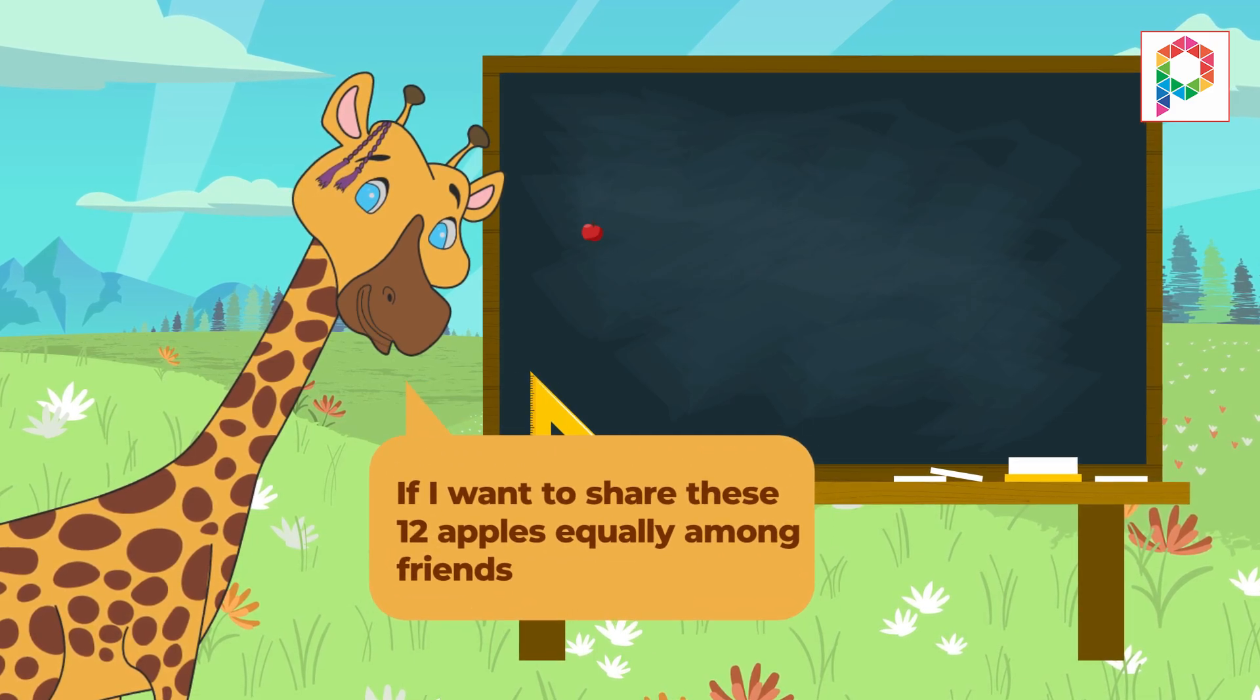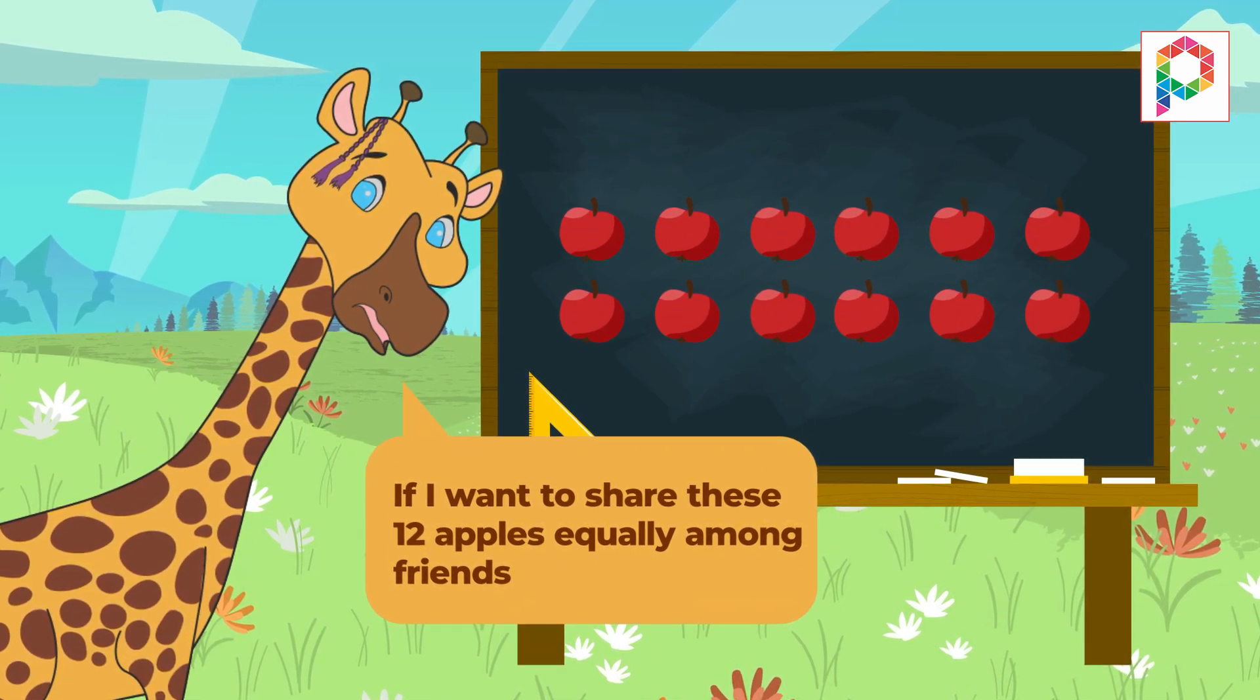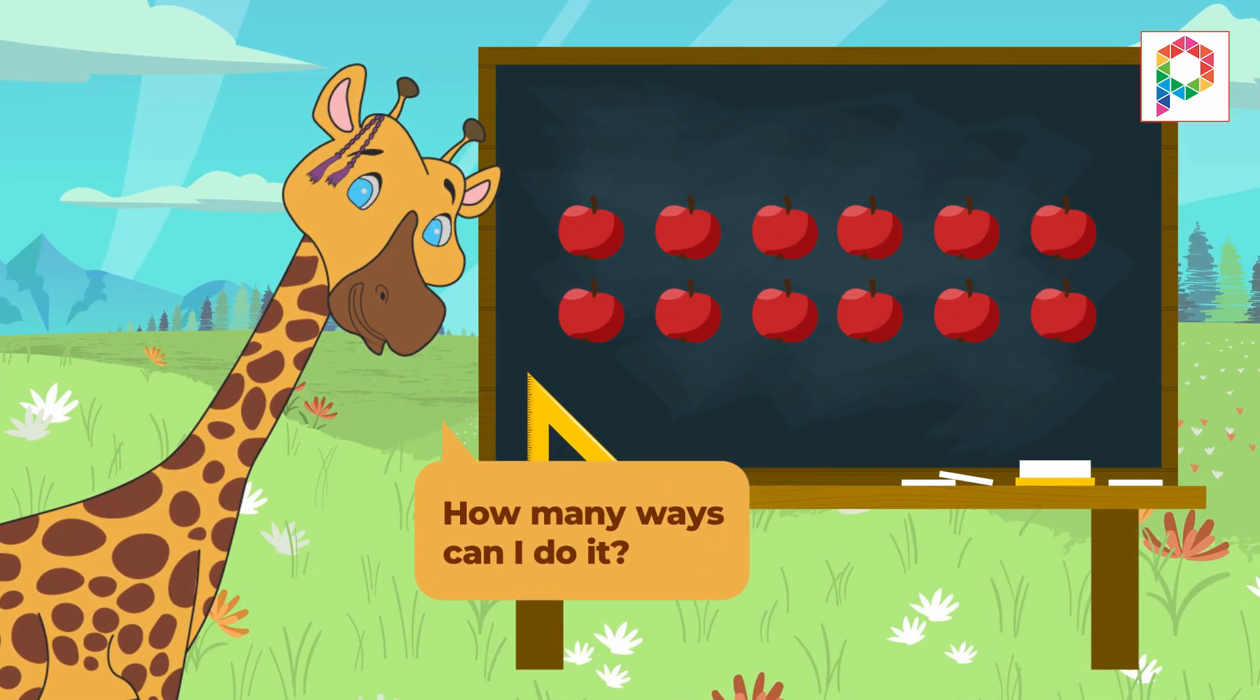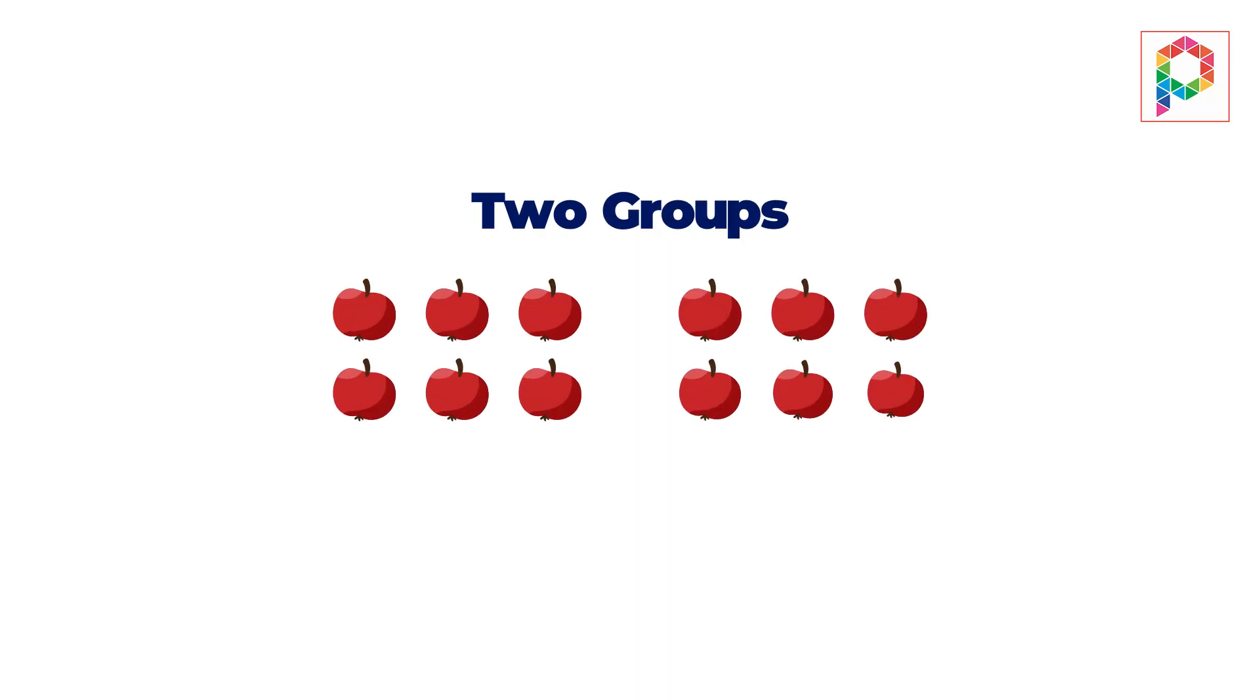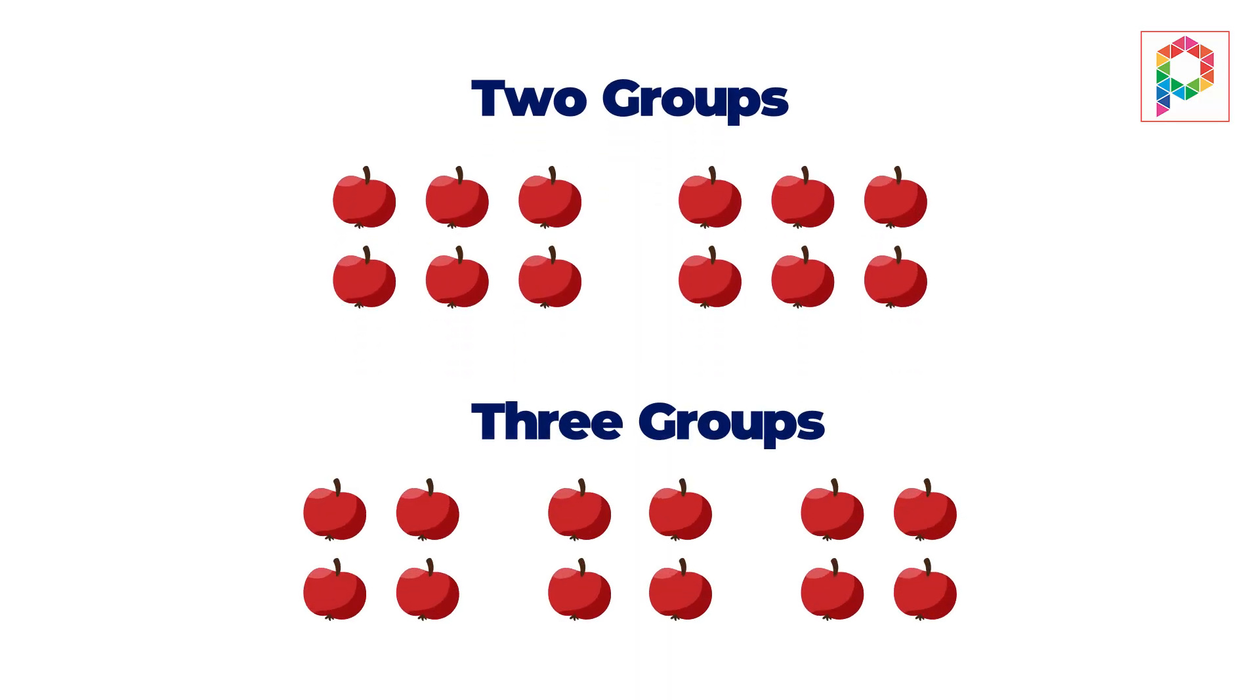Shalsi, if I want to share these 12 apples equally among friends, how many ways can I do it? Hmm, I could make two groups or maybe three.